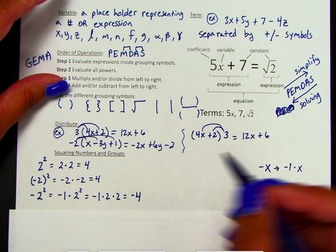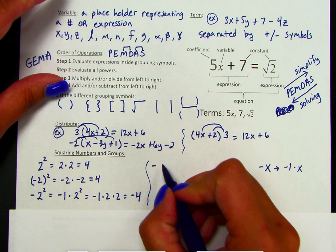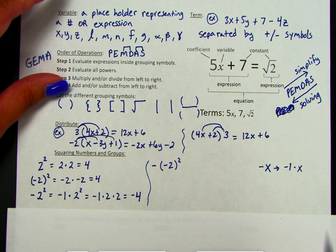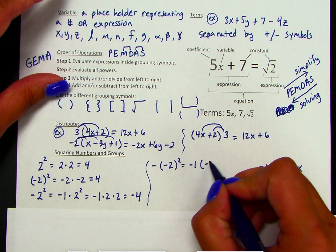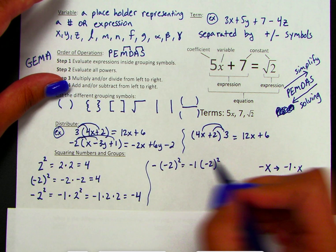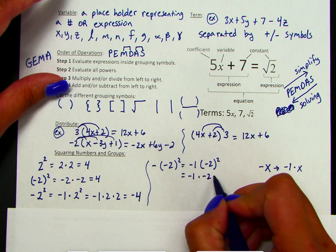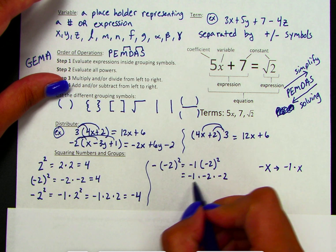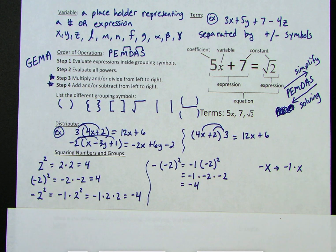We can also have a double negative: negative parentheses negative 2 squared. This means negative 1 times the group negative 2 squared, so really negative 1 times negative 2 times negative 2, which gives negative 4. Order of operations and grouping symbols really matter here.